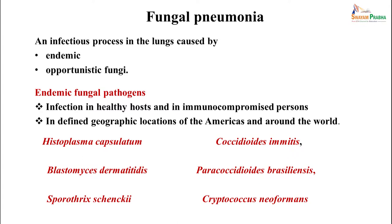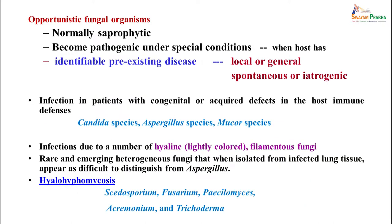Pulmonary infections can be caused by endemic or opportunistic fungi. Endemic pathogens such as Histoplasma capsulatum, Blastomyces, and Cryptococcus are seen in healthy or immunocompromised individuals in defined geographic locations like the Americas. Opportunistic infections are caused by normally saprophytic fungi in the environment, which only cause disease when the patient is immunocompromised due to disease or drugs. Infections are also seen in patients with congenital or acquired immune defects, caused by Candida, Aspergillus, Mucor, and newer fungi like Scedosporium and Paecilomyces.